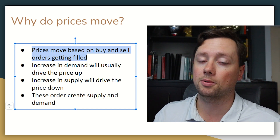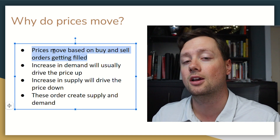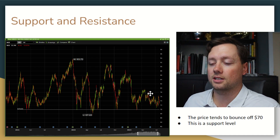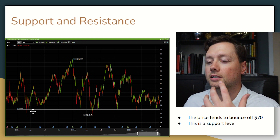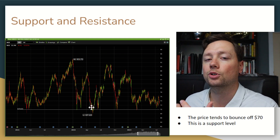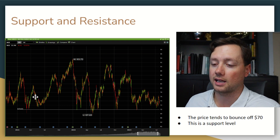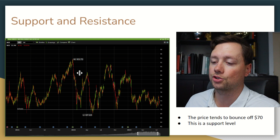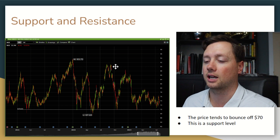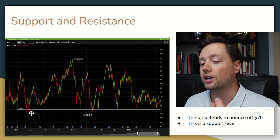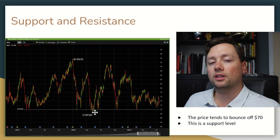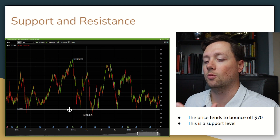When there's tons of demand the price goes up; when there's less demand and supply is steady or increasing, that's when you see prices go down. Now when you try to look for support and resistance on the chart you're basically looking for patterns where the price has bounced off certain price levels before, or where you can connect the lows of the price action. Price action is the price moving up and down on the chart — here from $93 down to $67 — and we can very clearly see that at $70 we tend to bounce off of this area.